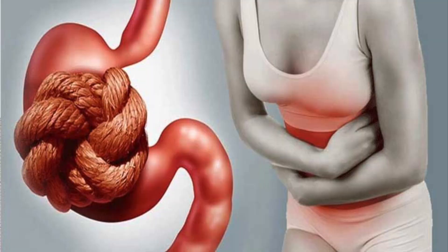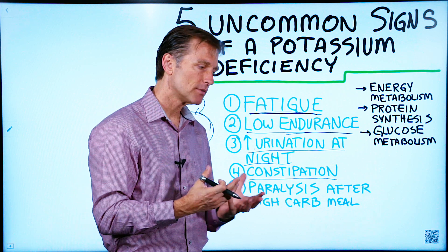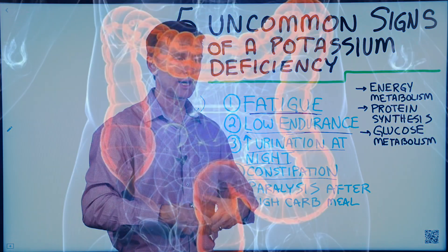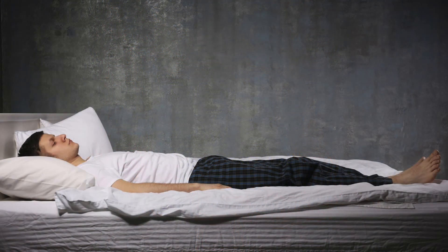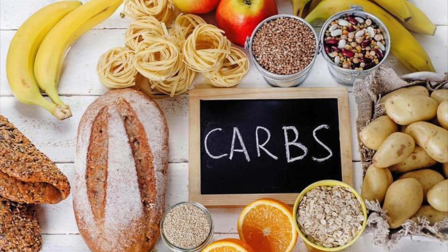Next one is constipation, because of the necessity of potassium involved in the smooth muscle that forms the colon. And number five, paralysis after a high carb meal.